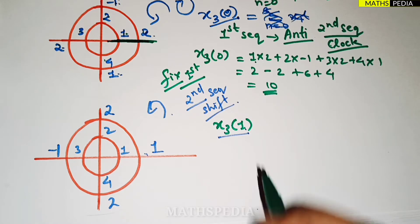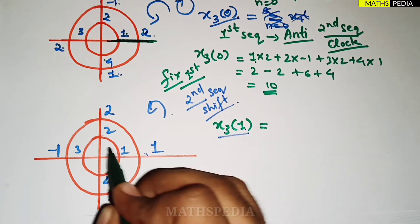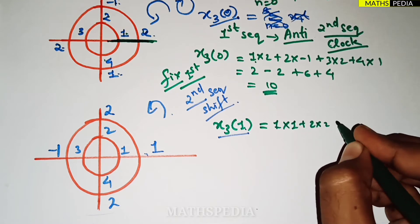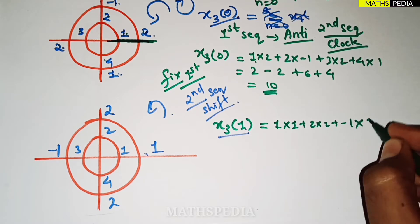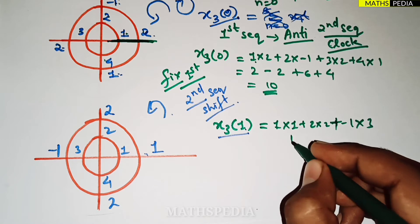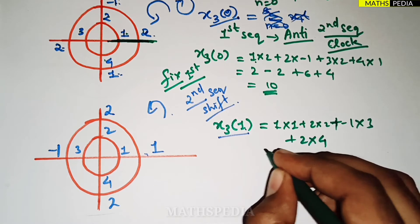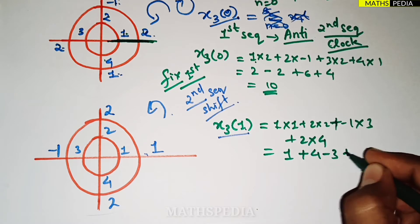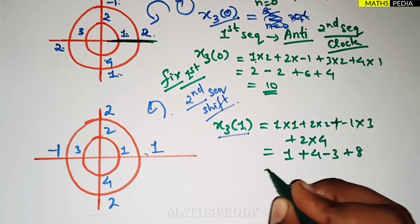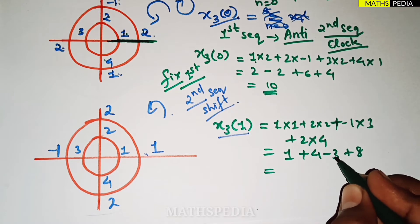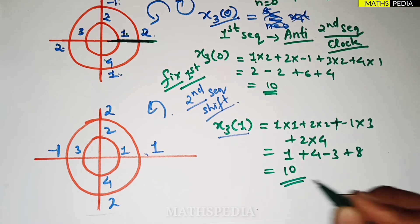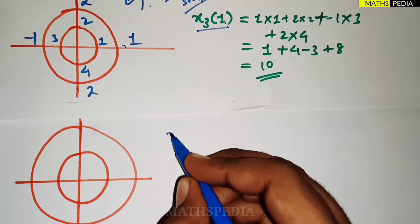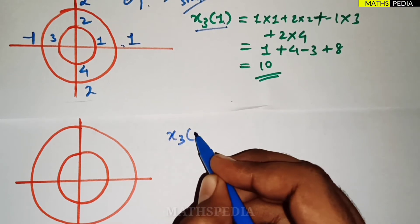Now multiply the corresponding values for x3(1): 1×1 + 2×2 + 3×(-1) + 4×2 = 1 + 4 - 3 + 8 = 10. So x3(1) = 10.